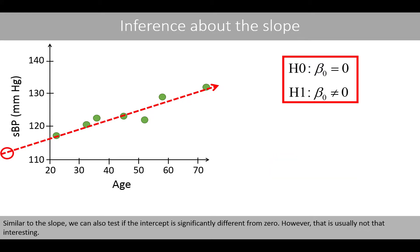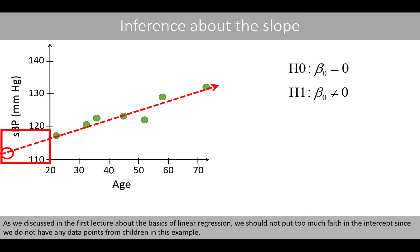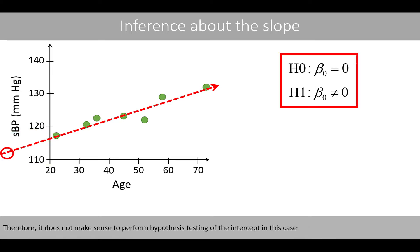Similar to the slope, we can also test if the intercept is significantly different from 0. However, that is usually not that interesting. In this case, the null hypothesis would state that newborns have a blood pressure of 0. As we discussed in the first lecture about the basics of linear regression, we should not put too much faith in the intercept since we do not have any data points from children in this example. Therefore, it does not make sense to perform hypothesis testing of the intercept in this case.